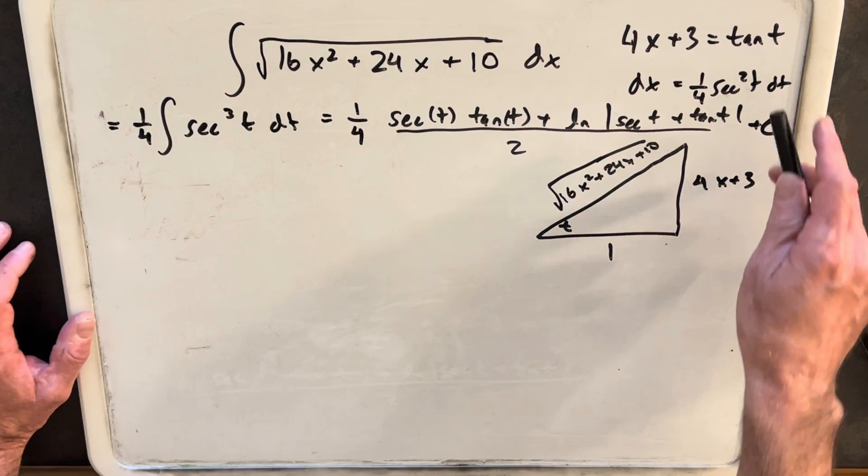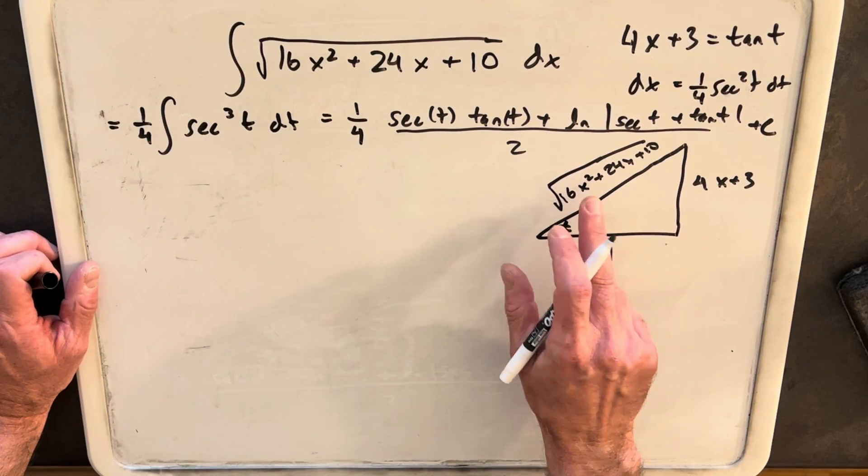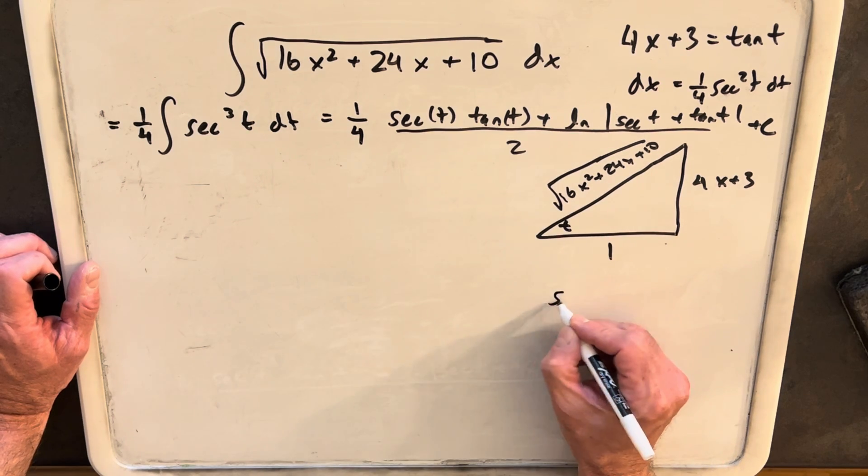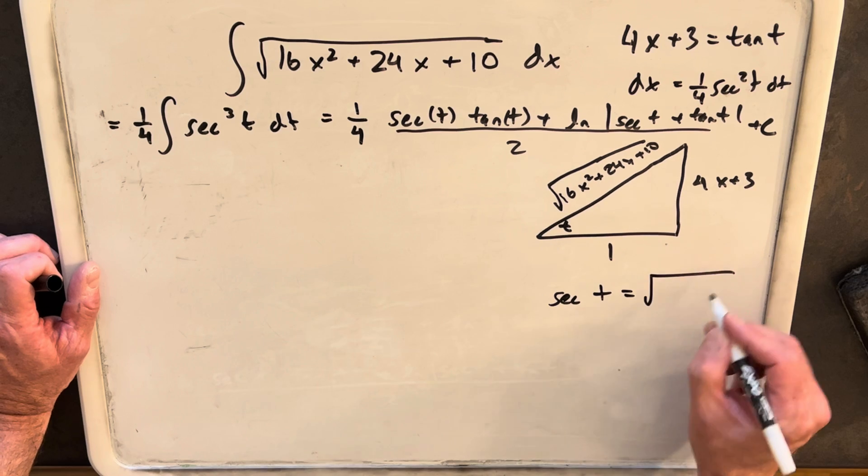So then this is going to give us our value of secant t because cosine is opposite over hypotenuse. And so for secant, we just flip it. So secant of t is just going to be this thing.